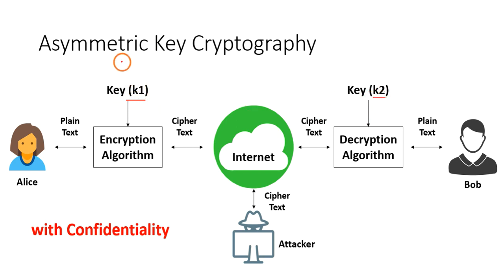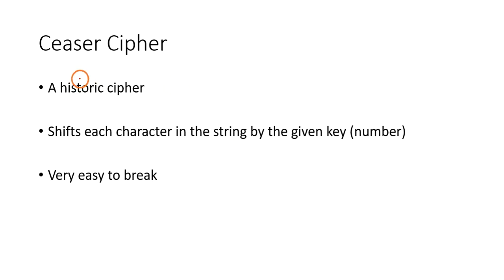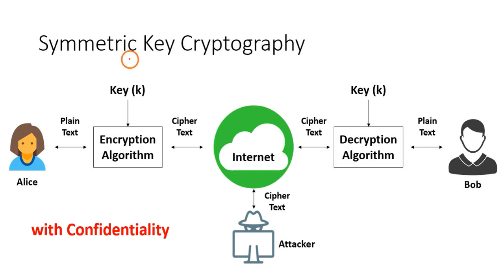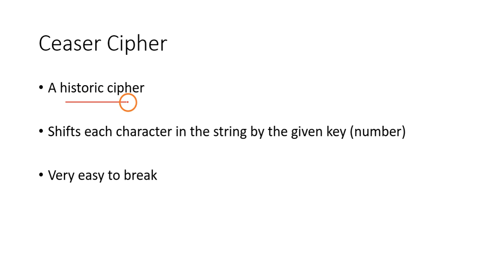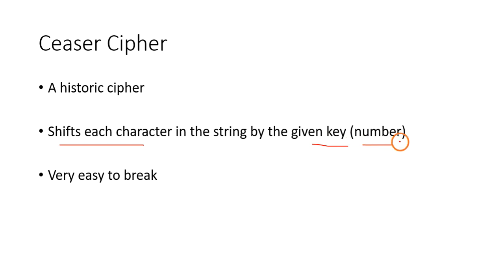Caesar cipher is a kind of symmetric key cryptography algorithm. It is a historic cipher — a very old one — used in the early days. In Caesar cipher, each character in the plain text is shifted by a given key, which is a number. That number tells how many characters you have to shift forward from the current character.